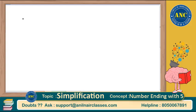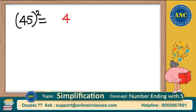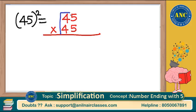Suppose I want to find 45 square. One way is (a+b) whole square; another way is the 50+x whole square concept for numbers from 26 to 75. Now here is another way. 45 square is 45 into 45. Observe carefully: what is the leftmost digit in both numbers? The leftmost digit in both is 4 — leftmost digit should be the same. That is the first condition.